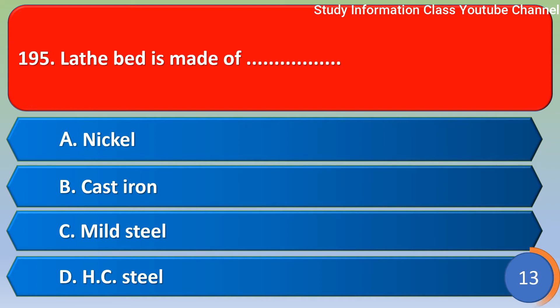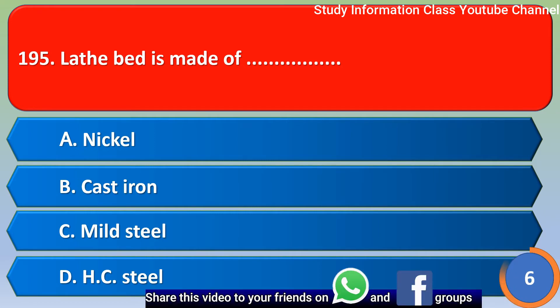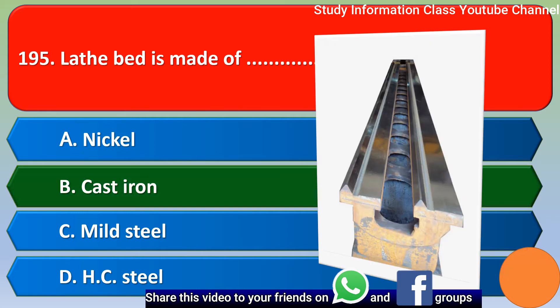Next question. Lathe bed is made of: Option A, nickel; Option B, cast iron; Option C, mild steel; Option D, HC steel. The correct answer is Option B, cast iron.